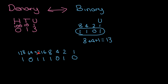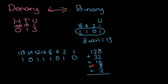Then I add up all the numbers that have a one underneath them. So that is 128 plus 32 plus 16 plus eight plus two. If I add all these together, that gives me my answer — that shows me how much this is in denary. Adding those up gives 186, which is what that binary number equals.